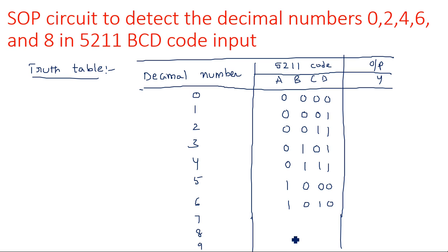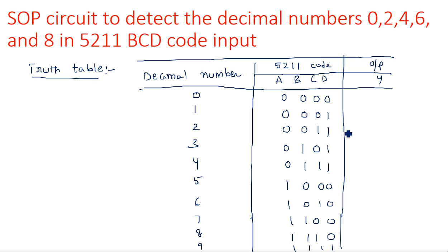Decimal 7 means 5 plus 2, represented as 1100. Decimal 8 means 5 plus 3, represented as 1110. Decimal 9 means all 1s, represented as 1111. This completes the 5-2-1-1 code table.